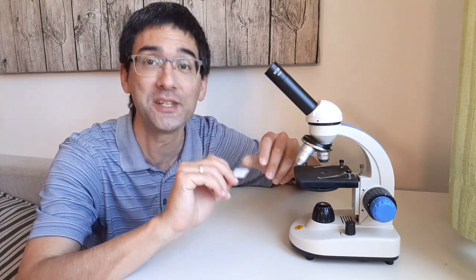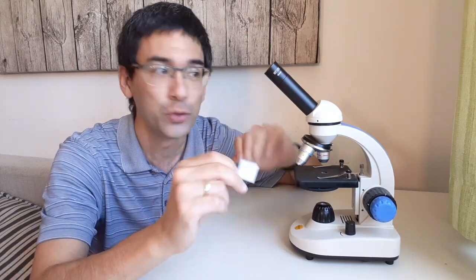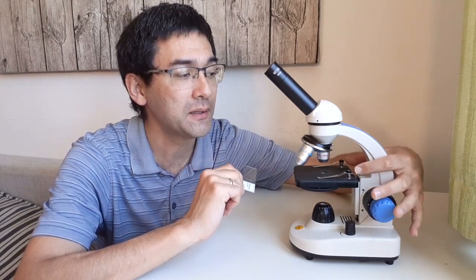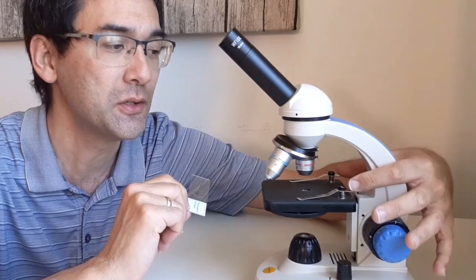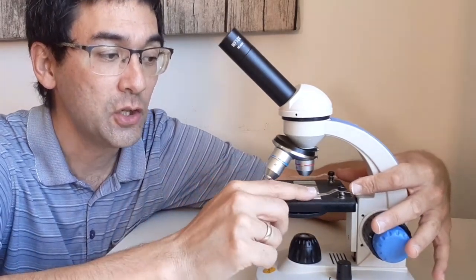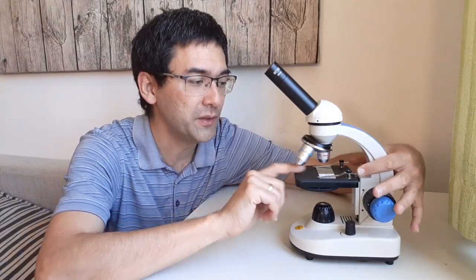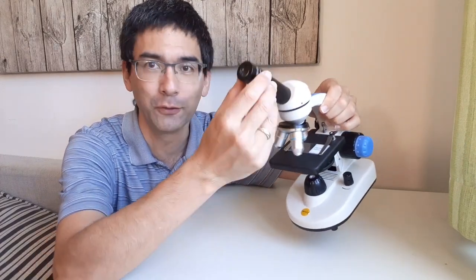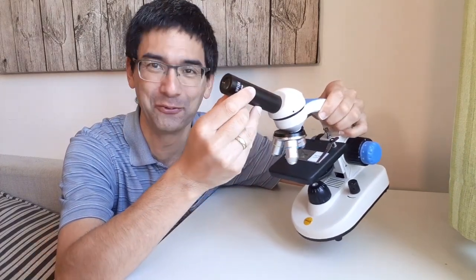The first thing that I want you to do is take a slide. Usually a microscope already comes with a whole box of prepared slides. You want to press the back of the stage clips here and then you can see that they're raised up and you can put the slide in. You always want to put it in with the label on top. Once you've done that, then the slide is not able to fall out.